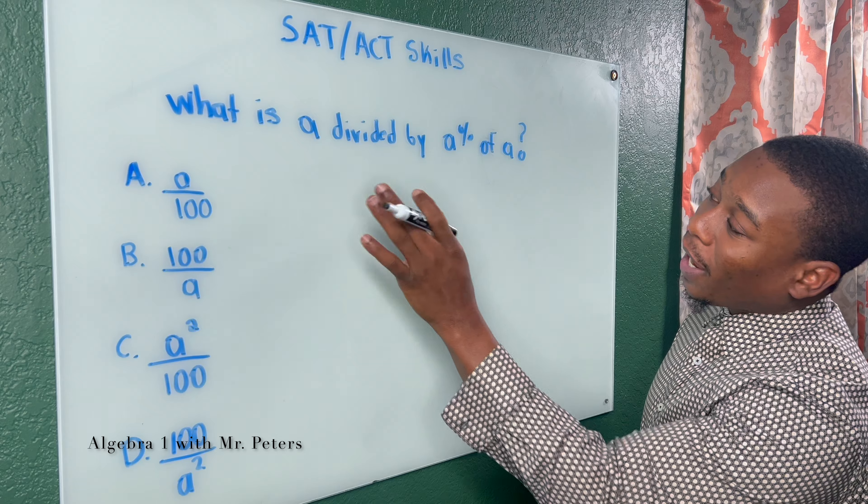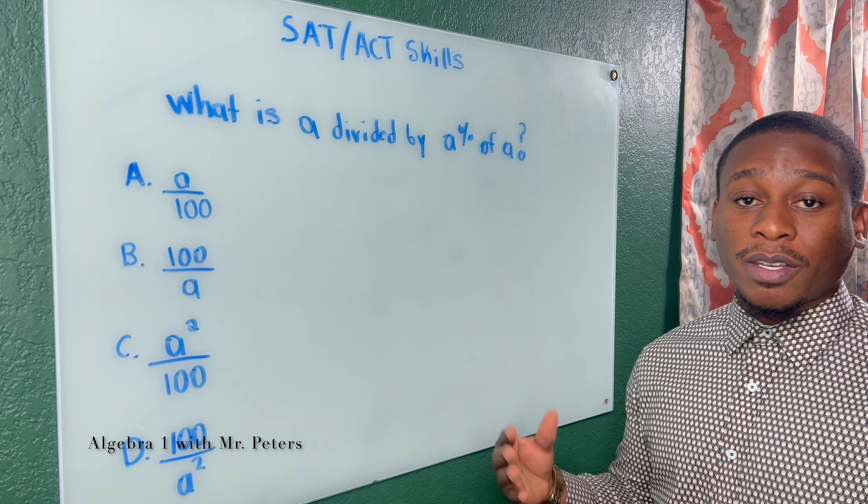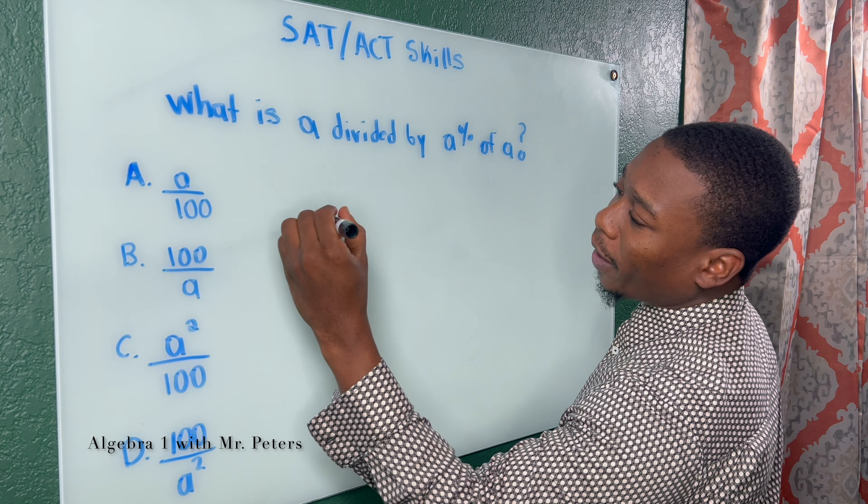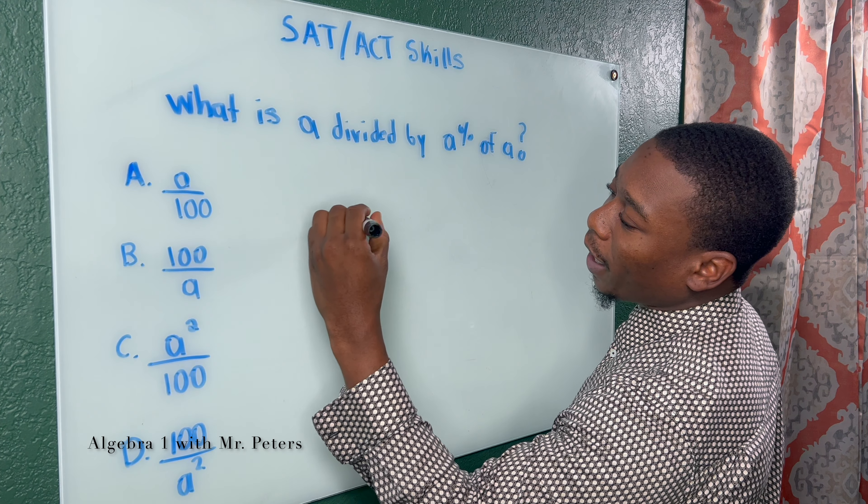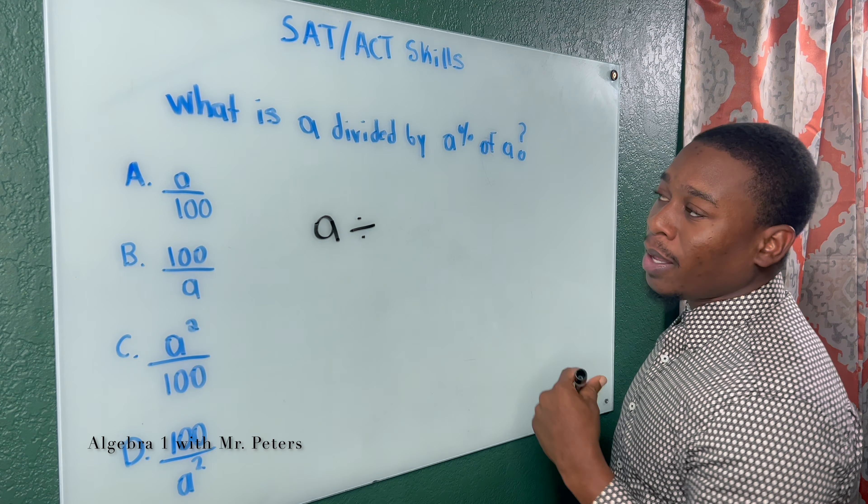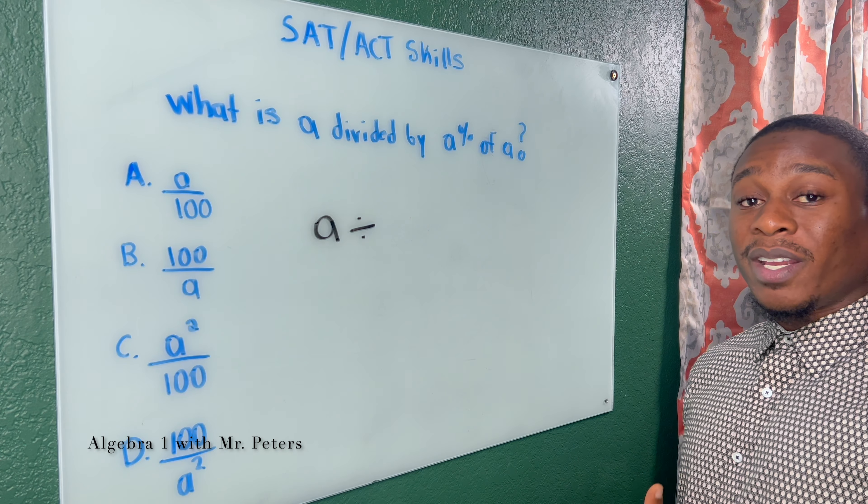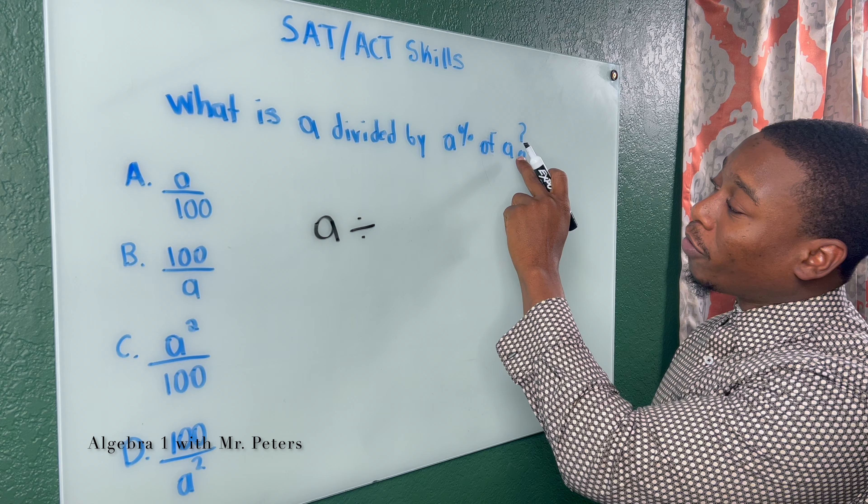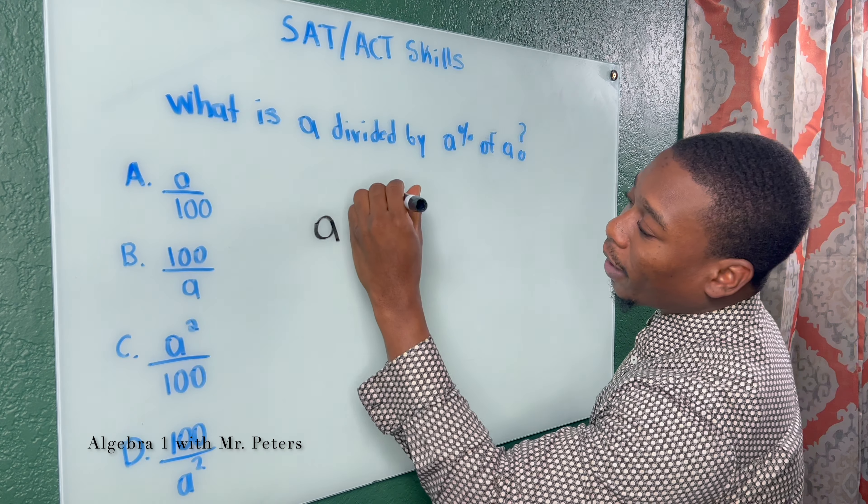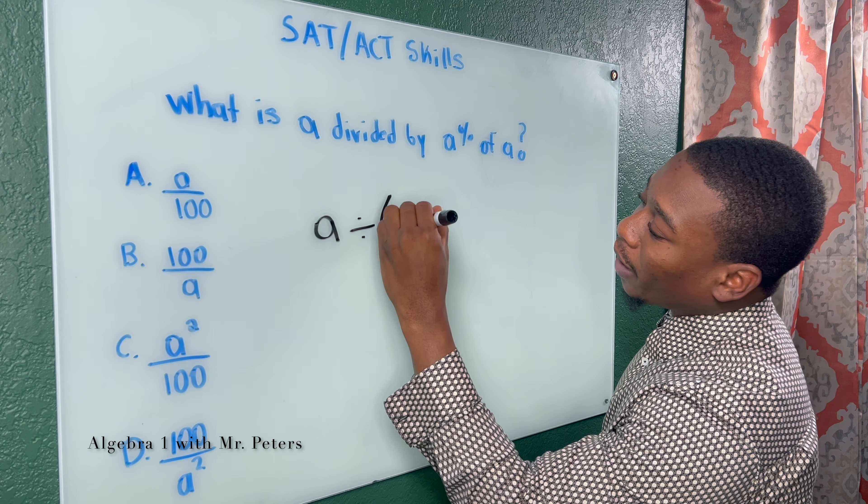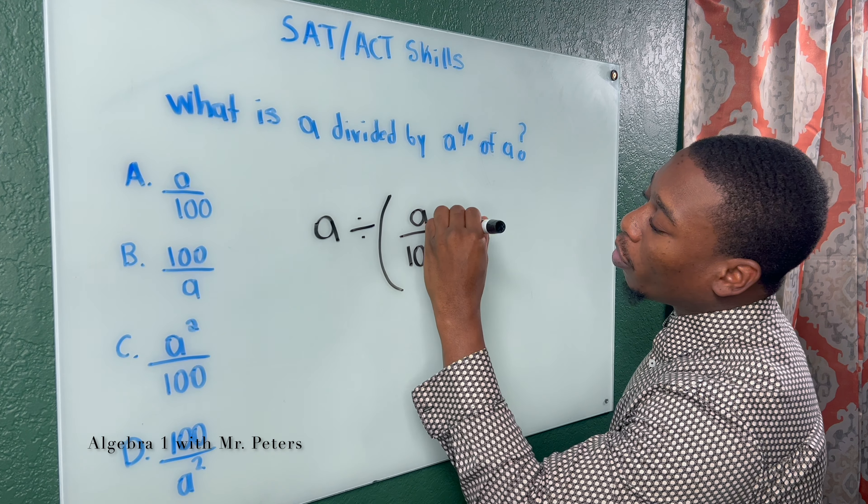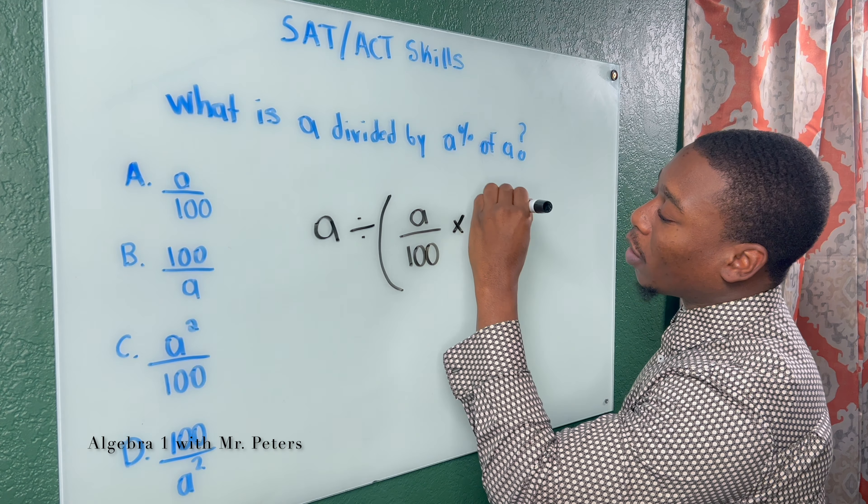So problem one says, what is A divided by A percent of A? So one thing we need to know, we know that when we start this problem off, we have A divided by. And anytime you want to find a percent of a number, let's say you wanted to find 50% of 100. To do that, we would normally put that number over 100, and then we would multiply it by the second number that we want to find.